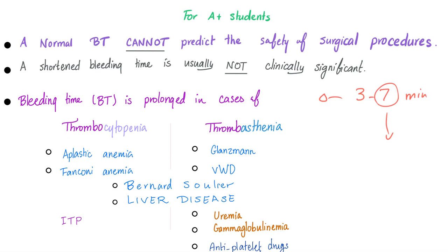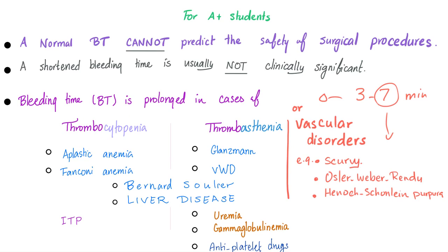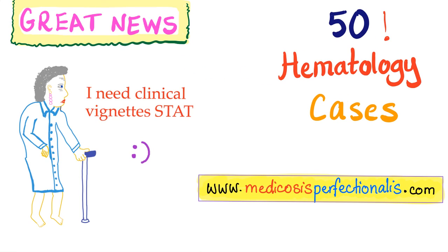Bleeding time is prolonged in cases of thrombocytopenia or thrombosthenia — either platelets are low in number or low in function. Examples of thrombocytopenia: aplastic anemia, Fanconi anemia, ITP. Examples of thrombosthenia: Glanzmann's thrombosthenia, von Willebrand disease, uremia, hypergammaglobulinemia such as multiple myeloma. Antiplatelet drugs — aspirin, NSAIDs, P2Y12 inhibitors like clopidogrel, and GP2B3A inhibitors like abciximab — also prolong bleeding time. Liver disease and Bernard-Soulier can cause both thrombocytopenia and thrombosthenia, prolonging bleeding time.